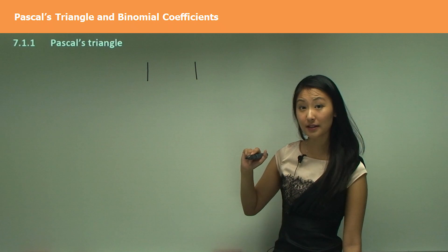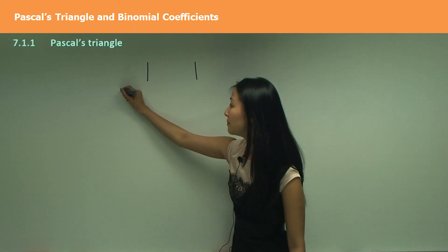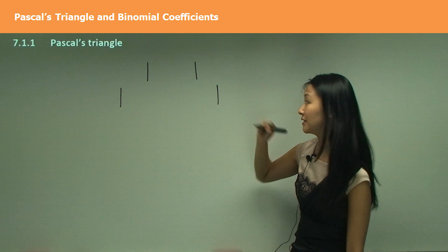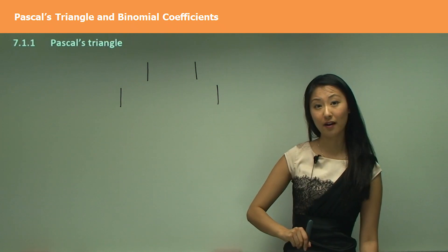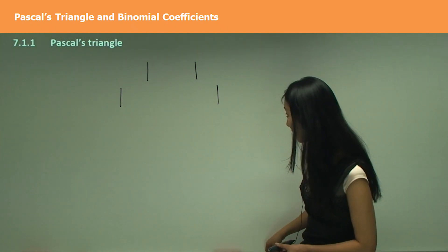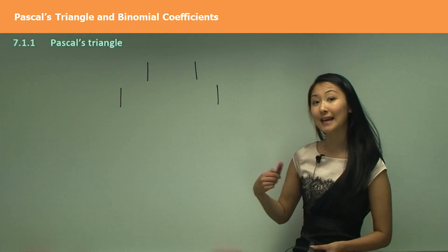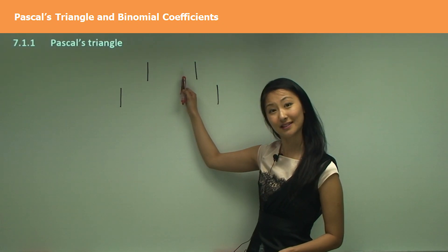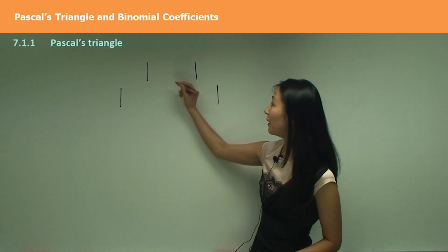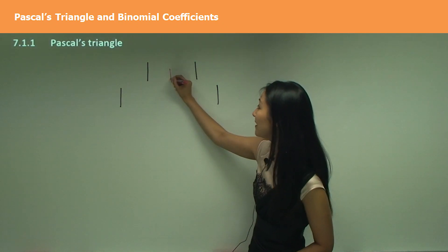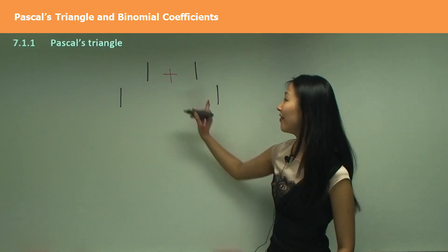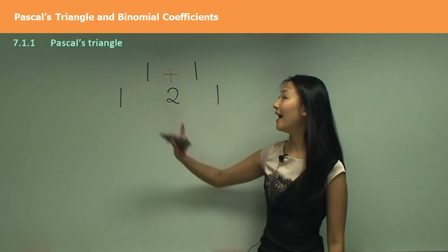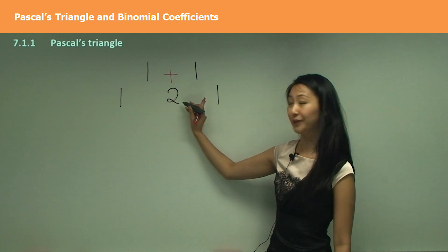The first number is always going to be one, and the last number is always going to be one. But the numbers in between we get from the addition of the previous numbers. So to get this number, we add one and one, and that gives us two. So this row here has one, two, one.